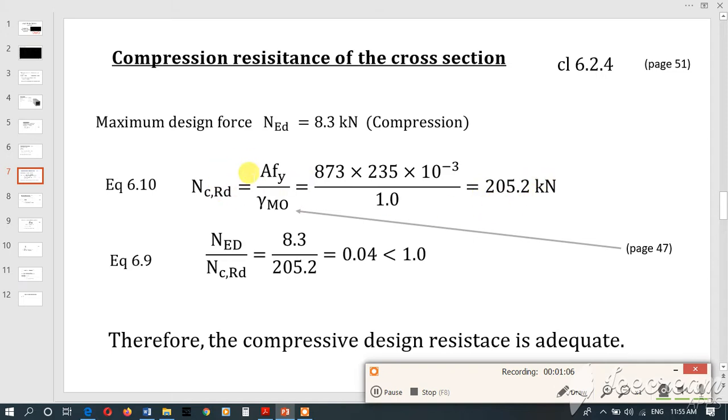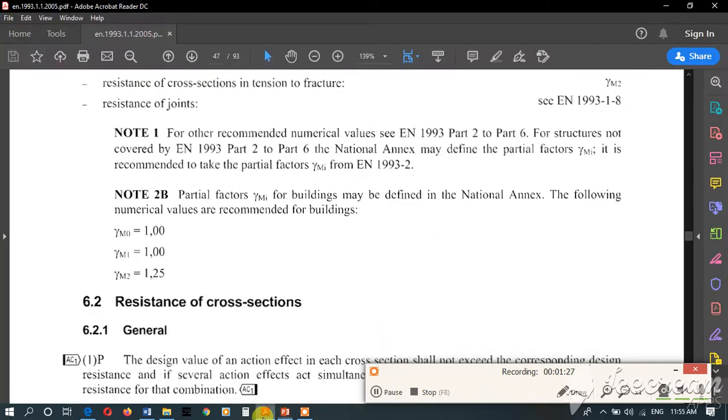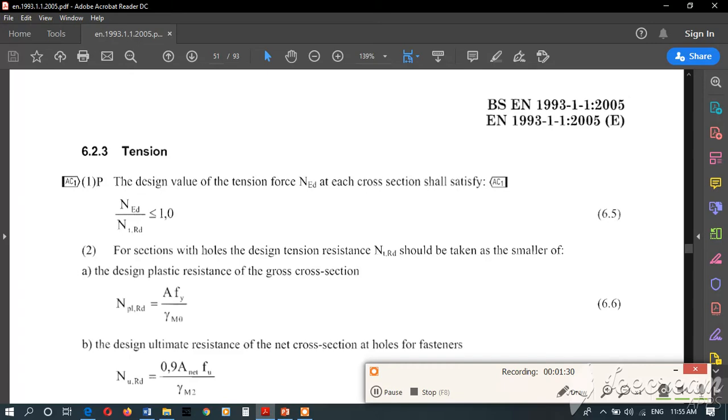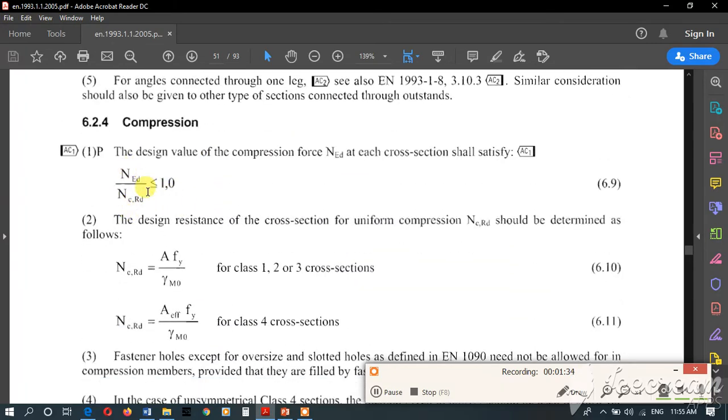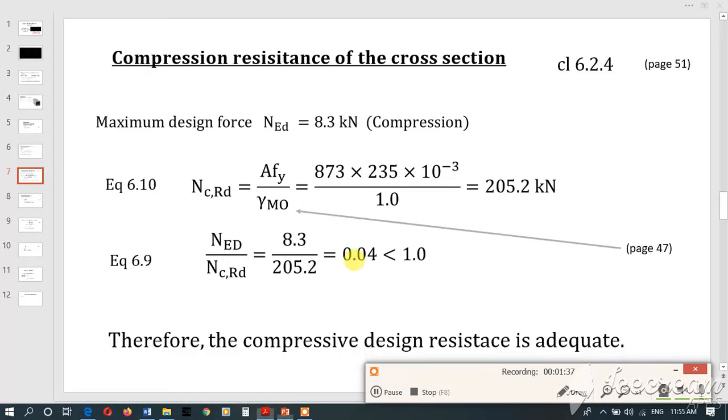Now we know ncr. According to this equation, we know ned and ncr, so we divide these values to get the answer. To satisfy this requirement, ned over ncrd should be less than or equal to 1. According to our calculation it is less than 1, meaning the compressive design resistance is adequate. Compression resistance of the cross section is satisfied, so we'll move to the next step.